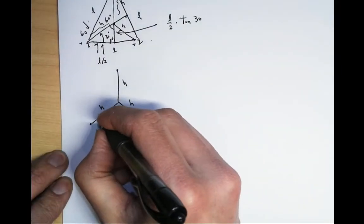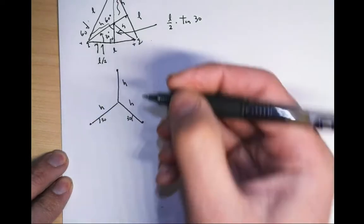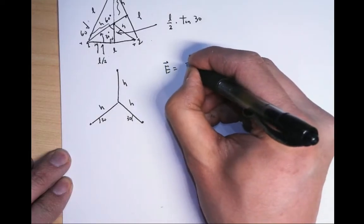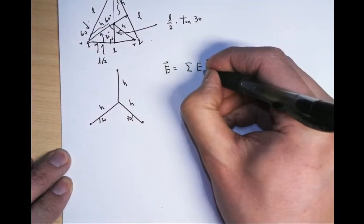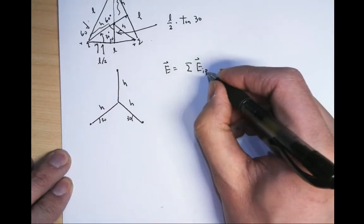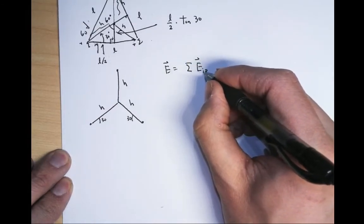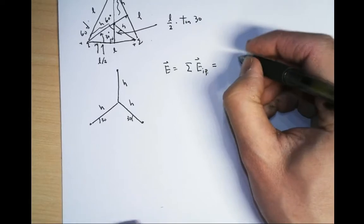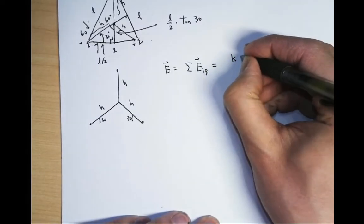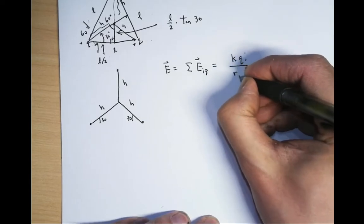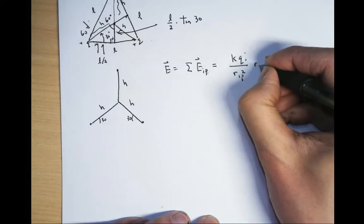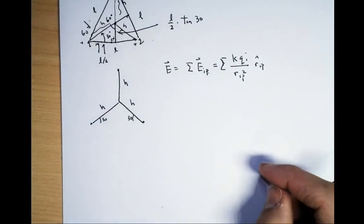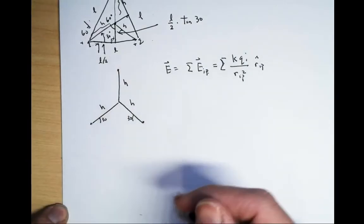The angles are 30 degrees, 30 degrees, and straight down. The electric field is the sum of all contributions: E equals the sum over i of k·Qᵢ divided by Rᵢₚ squared times R̂ᵢₚ, where P is the center point we care about.